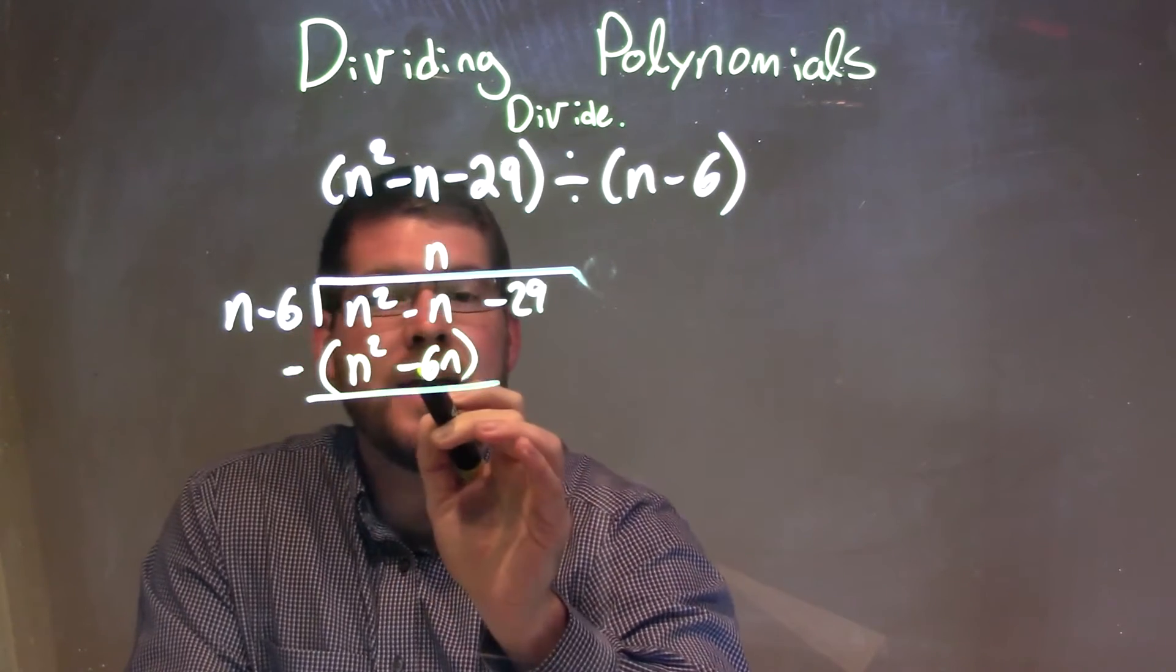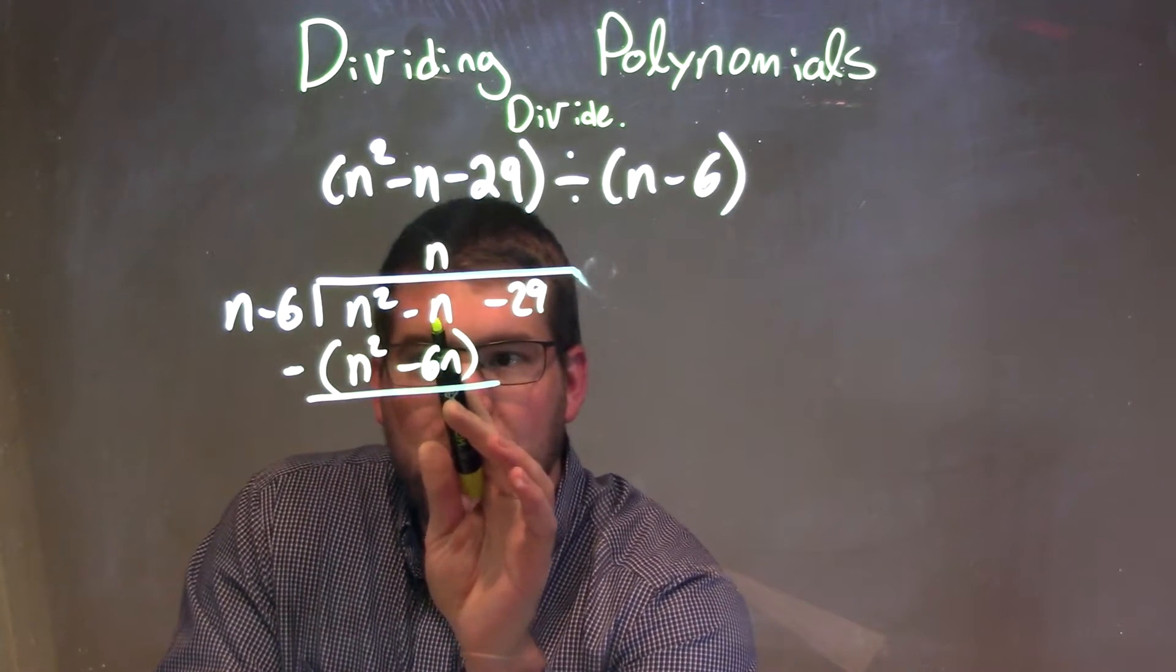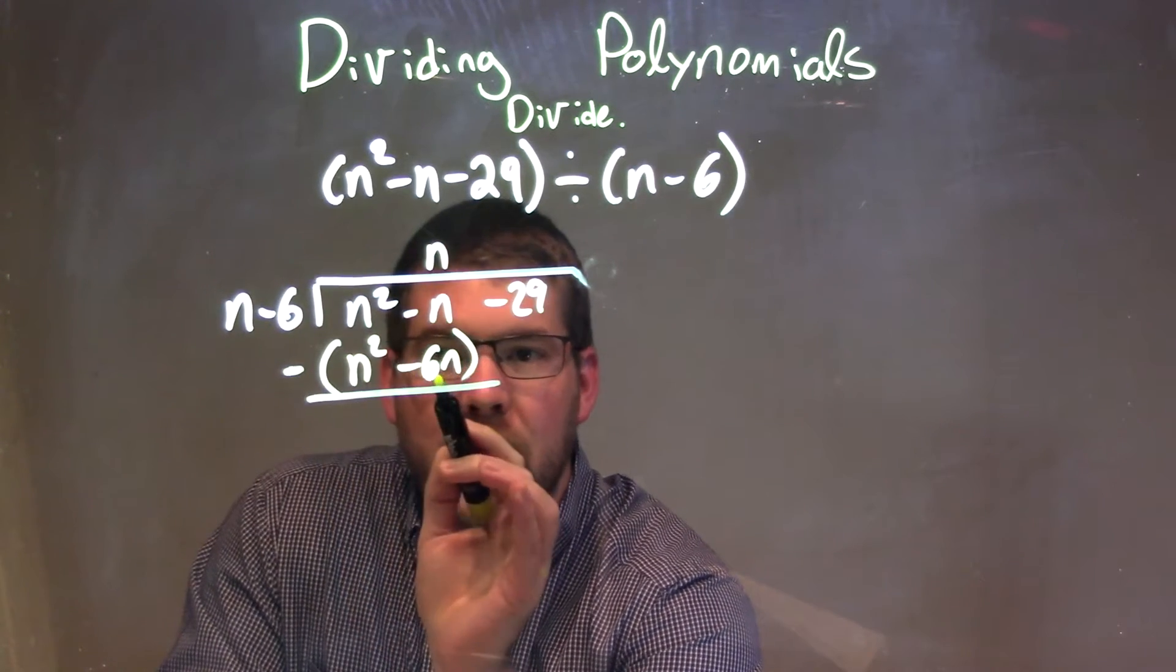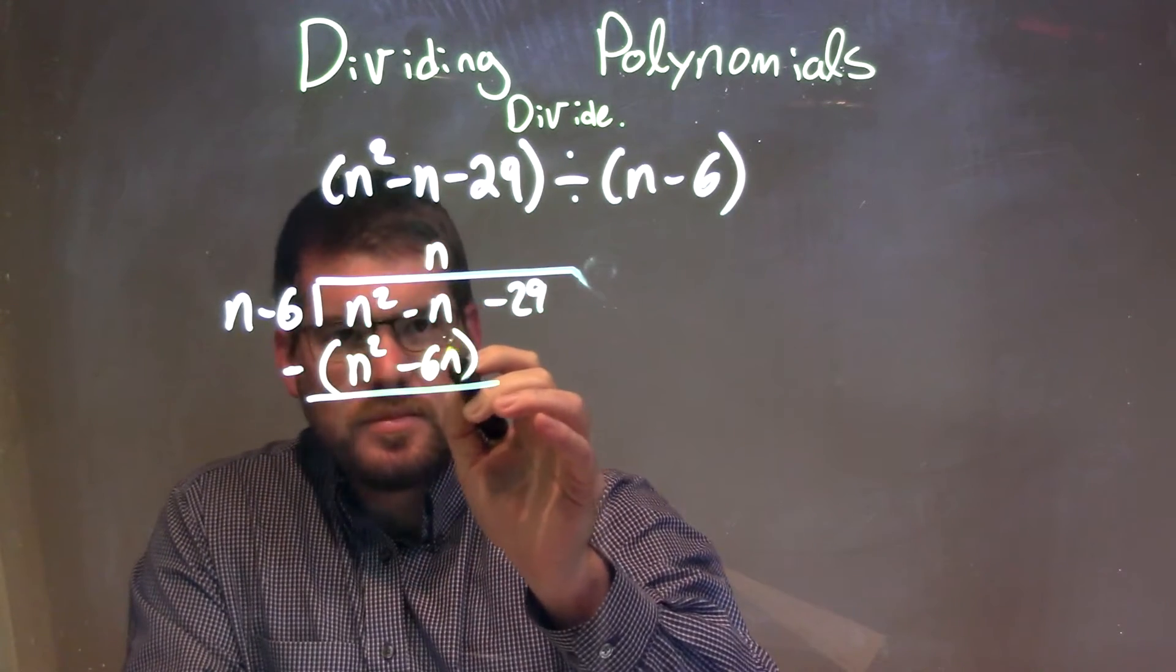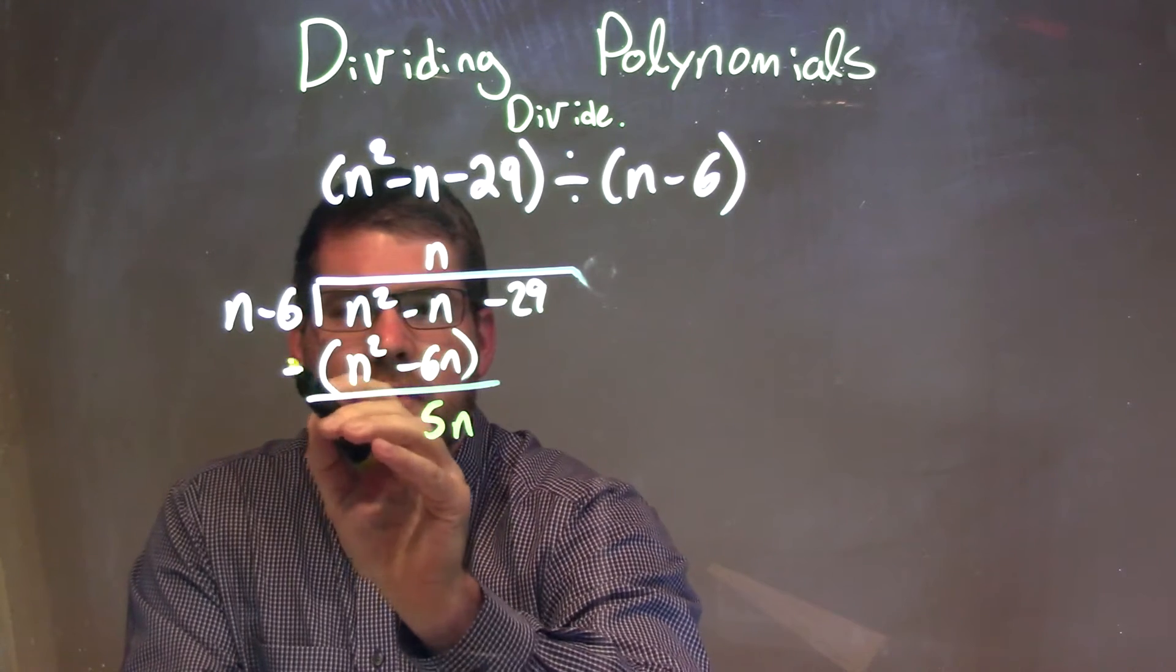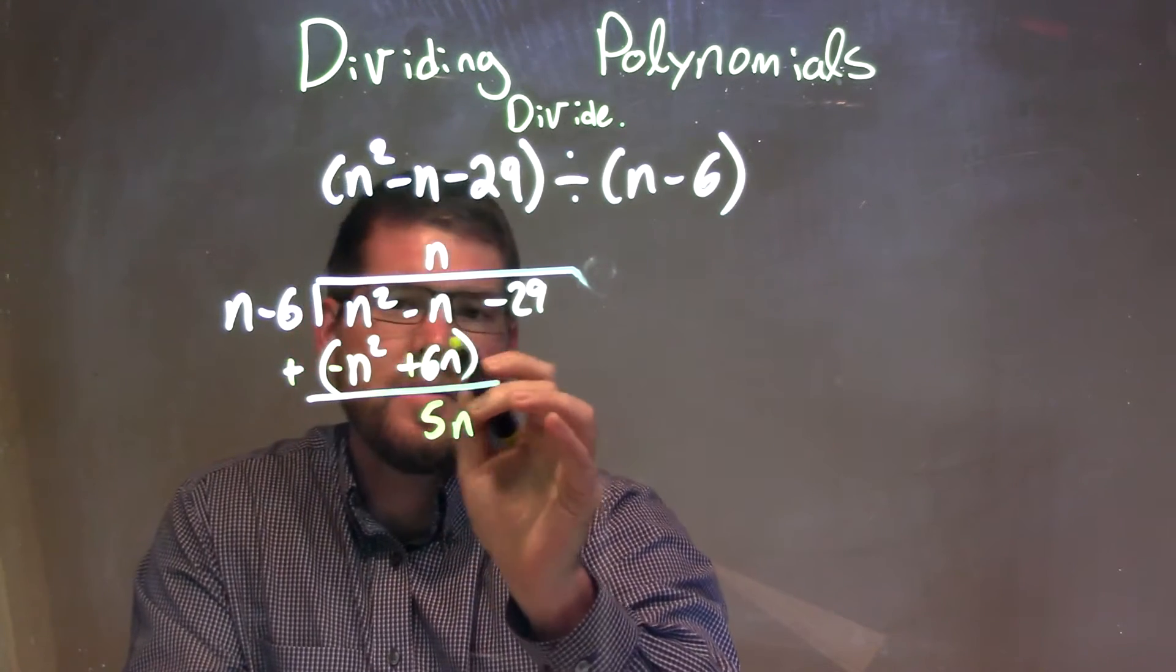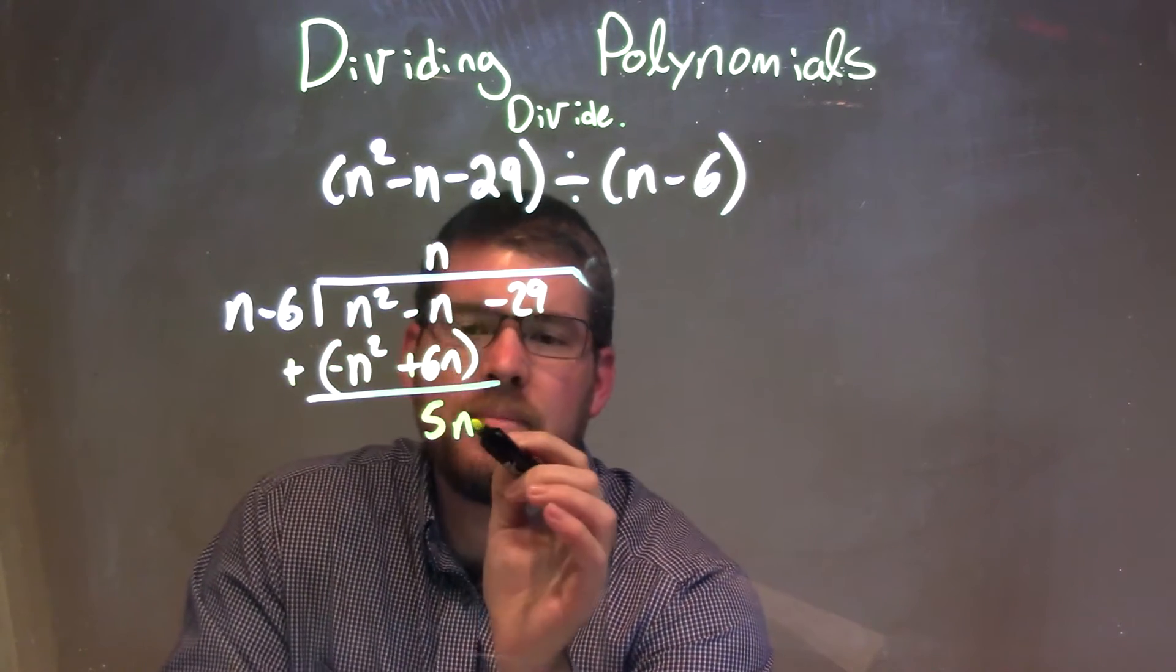Minus n minus a negative 6n is the same thing as adding 6n, right? So minus n plus a positive 6n. We can distribute that. That comes out to be a 5n. And if you need to see it, you can distribute this minus sign across like that. It makes it easier. You can see minus n plus 6n is 5n.